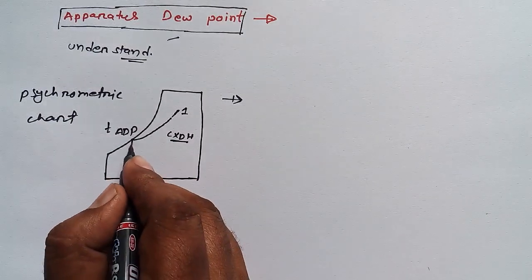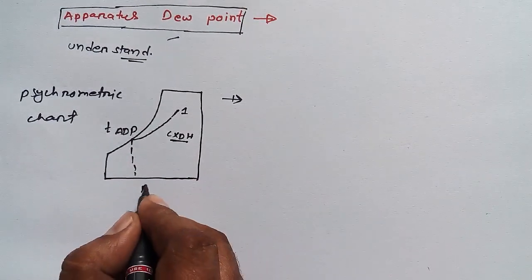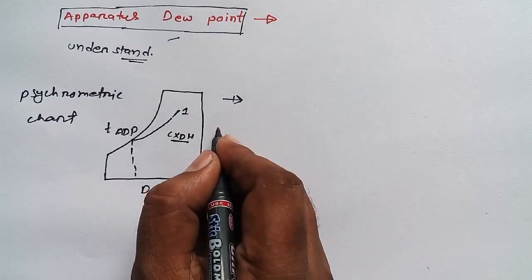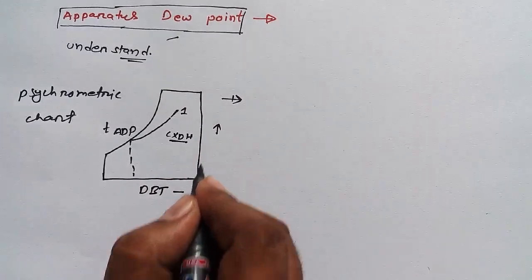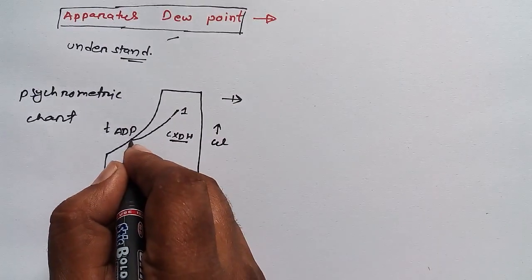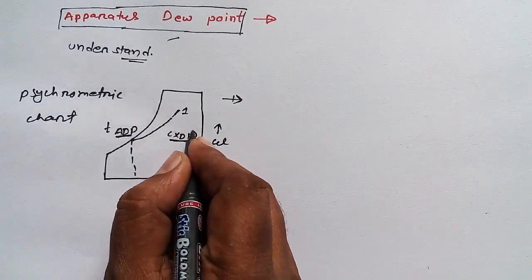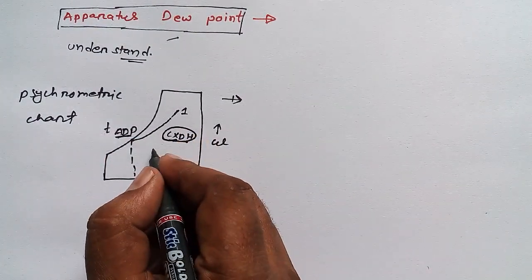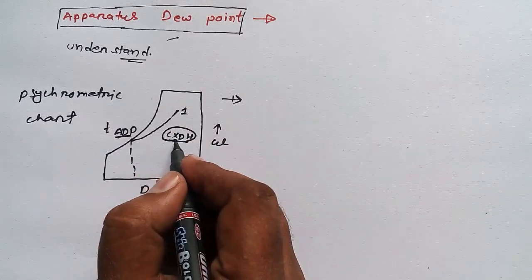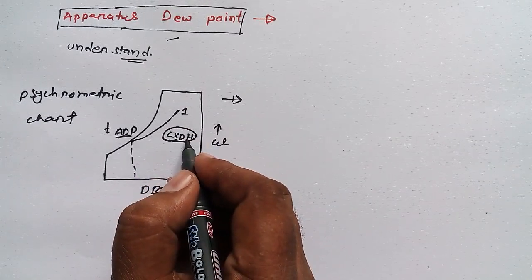If I say in terms of temperature, I mean dry bulb temperature, because this side would be DBT, this side would be specific humidity. So this is apparatus dew point here, and it is obtained because of extending cooling and dehumidification.